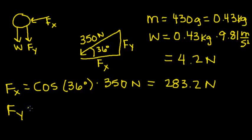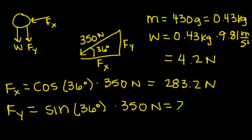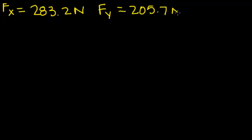The force in the y direction is going to be found by multiplying the sine of 36 degrees by 350 newtons, which comes to 205.7 newtons. Just to refresh our memory, the force in the x direction is 283.2 newtons, the force in the y direction is 205.7 newtons, and the weight is 4.2 newtons.